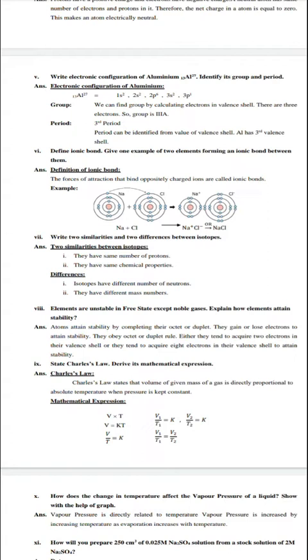Question 6: Define ionic bond. Give one example of two elements forming ionic bond between them. First we define ionic bond, then give an example. We give the example of Na plus Cl, sodium chloride. Sodium gives its valence electron, chlorine takes one electron. Sodium gets a plus charge, chlorine gets a minus charge, so they form NaCl. The bond between them is ionic bond.